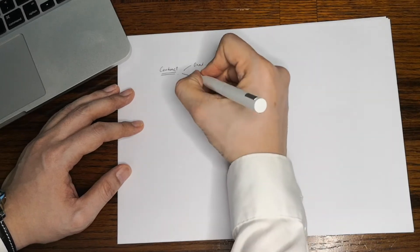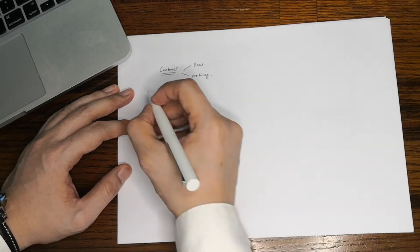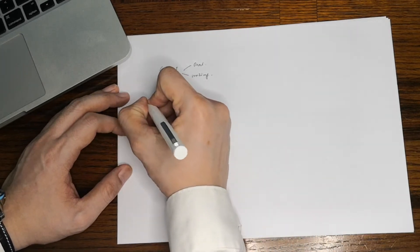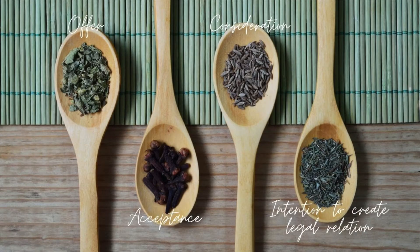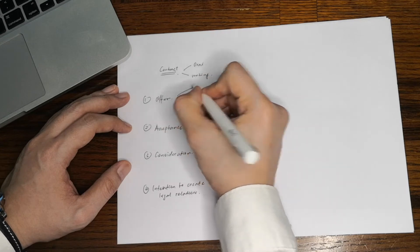In every contract, there must always be four ingredients: namely an offer and acceptance, a valid consideration, and an intention to create legal relations. An offer is an indication of one's willingness to do or refrain from doing something that is capable of being converted by acceptance into a contract.